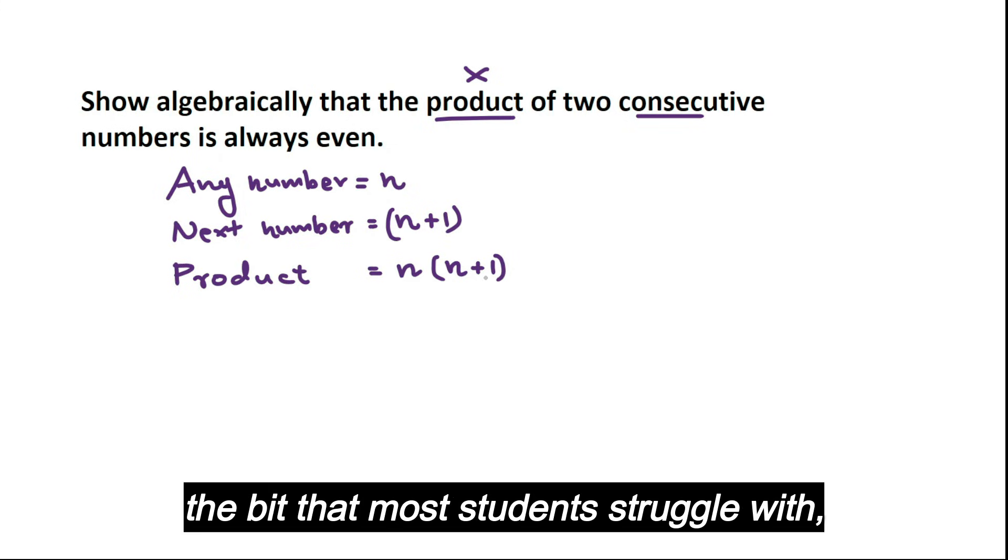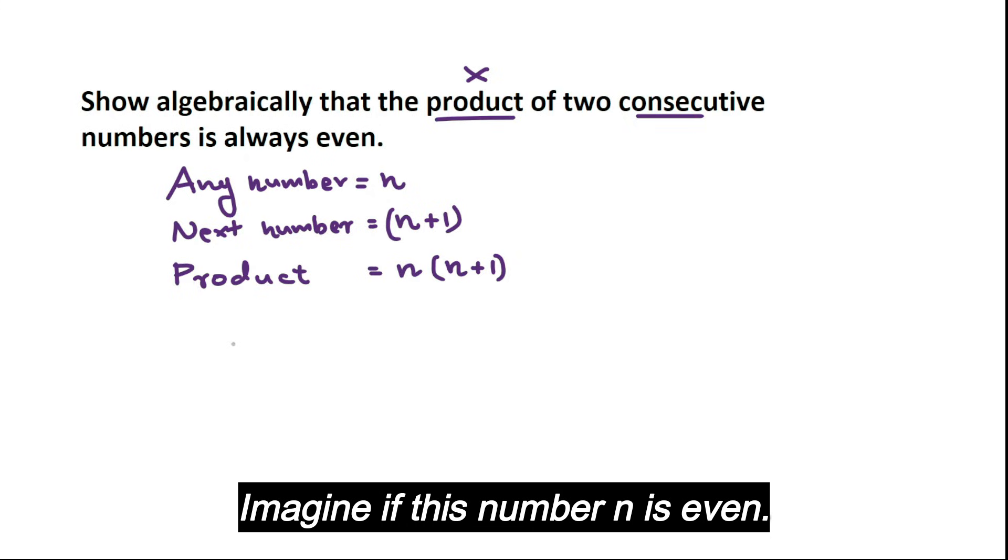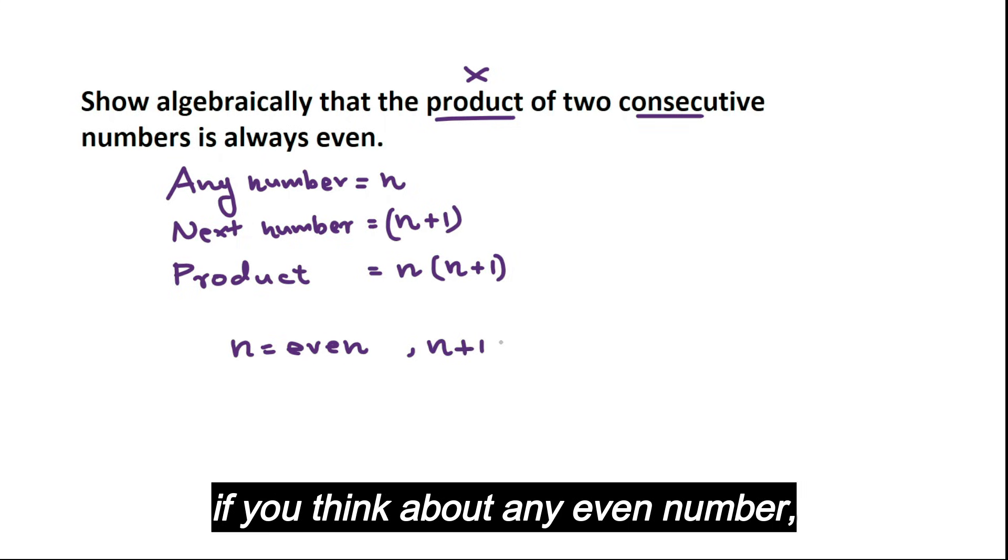Now this is the bit that most students struggle with. So let's see what we can do. Imagine if this number N is even. So obviously N+1 must be odd.